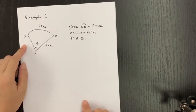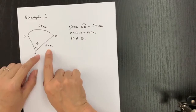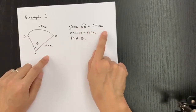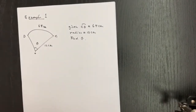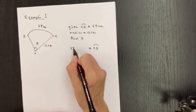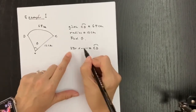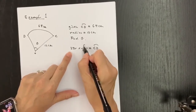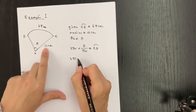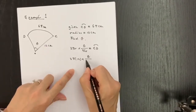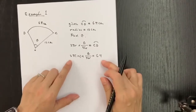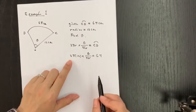Here we have Example 1. We have part of a circle where the radius is 12 cm. We don't know theta, but we are given the arc length CD which is 6π cm. We need to find theta. So I set up the equation: arc CD equals 2πr times theta over 360, which is the unknown.